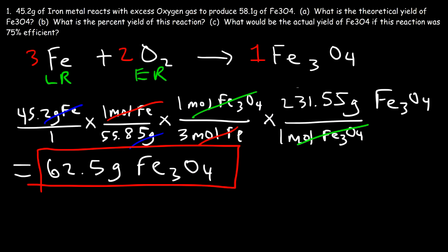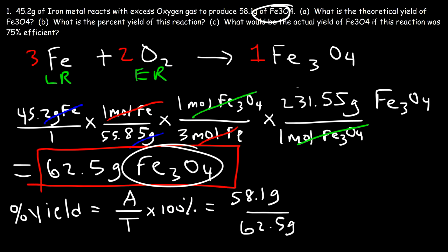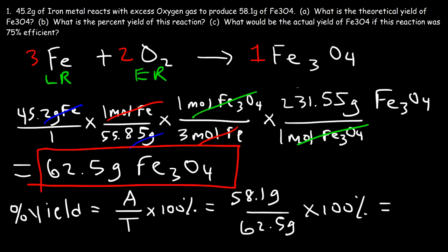Now let's find the percent yield of this reaction. The percent yield is equal to the actual yield divided by the theoretical yield times 100%. We have the theoretical yield — it's 62.5 grams. The actual yield is the grams or moles of the product given to us in the problem. We were given that 58.1 grams of Fe3O4 was actually produced in this reaction — that is the actual yield. The actual yield should always be less than the theoretical yield, and it should correspond to the same substance, Fe3O4.